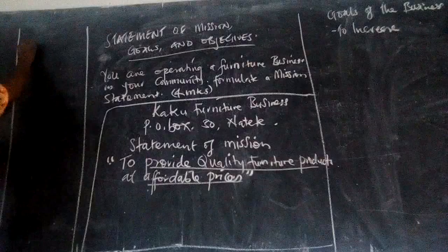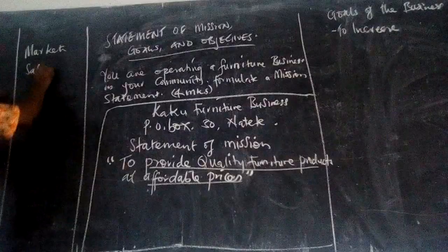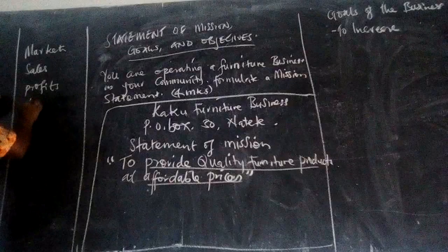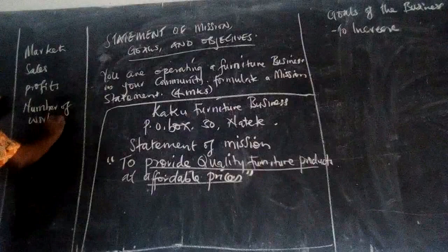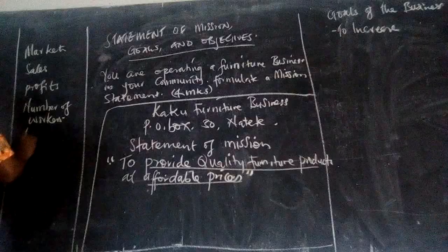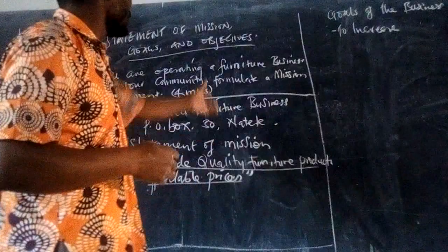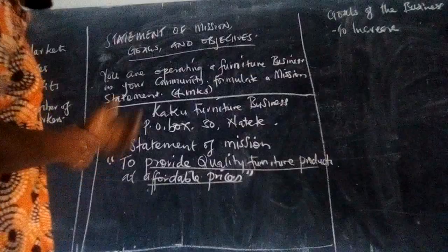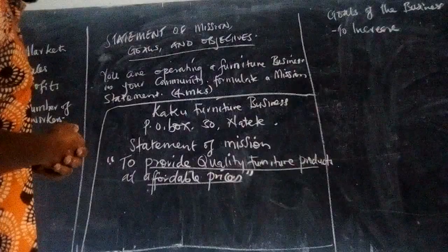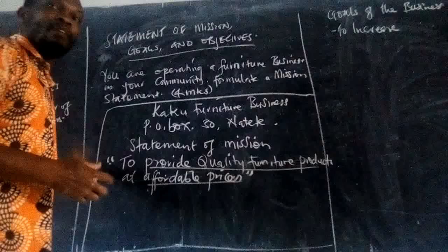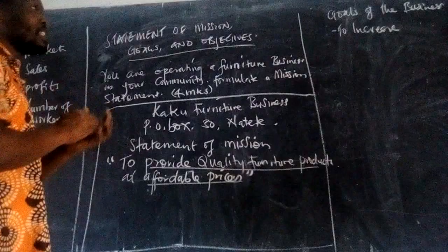You can talk about sales, you can talk about profits, you can talk about number of markets. There are specific items, even relating to the nature of the business. If this is a financial business, probably the business needs to increase its customers, maybe increase its sales, maybe increase profits, increase the number of workers, maybe widen the business in the form of buying more land. All those are to be specific targets.